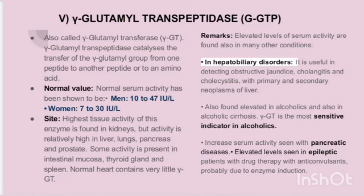Elevated levels of serum GGT activity are found particularly in hepatobiliary disorders. It is useful in detecting obstructive jaundice, cholangitis, and cholecystitis, with primary and secondary neoplasms of the liver. It is also elevated in alcoholics and in alcoholic cirrhosis — notably, gamma GT is the most sensitive indicator in alcoholics. Elevated serum activity is also seen with pancreatic diseases, and elevated levels are found in epileptic patients on anticonvulsant drug therapy, probably due to enzyme induction.